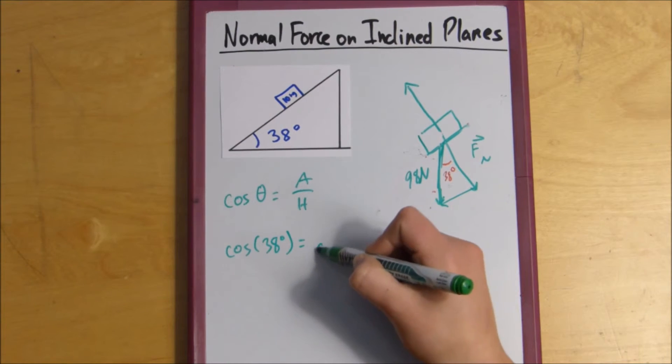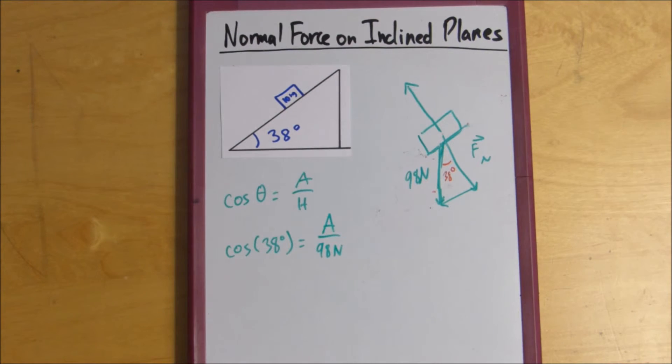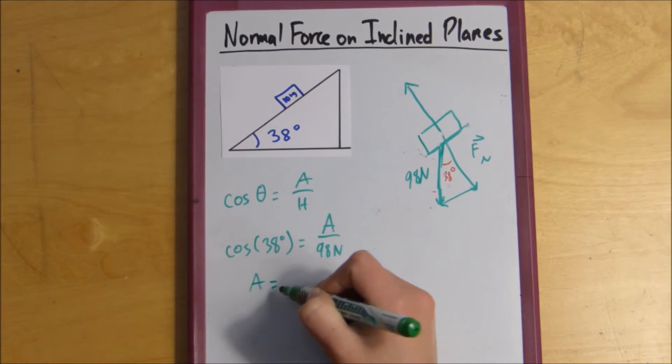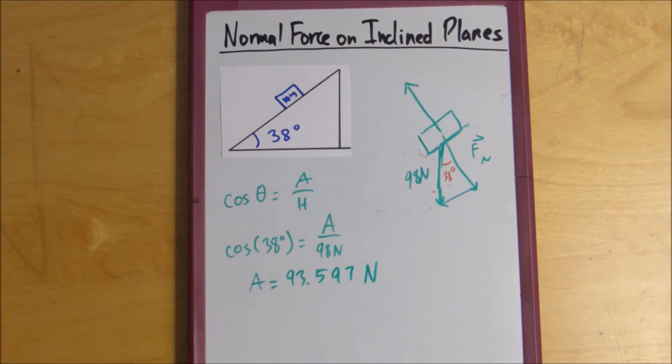And we know the hypotenuse, 98 newtons. And we don't know the adjacent, so our normal force. So we multiply 98 across. Cosine of 38 times 98. And we get that our adjacent equals 93.597 newtons.